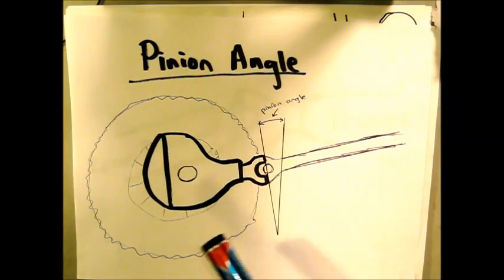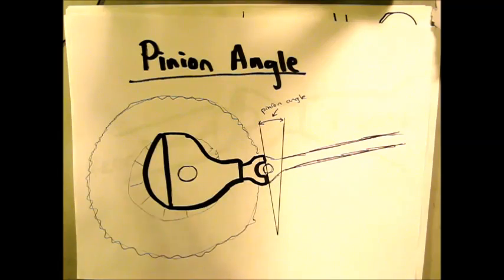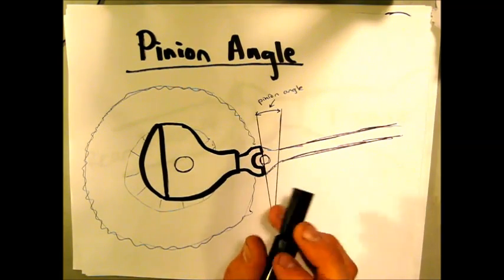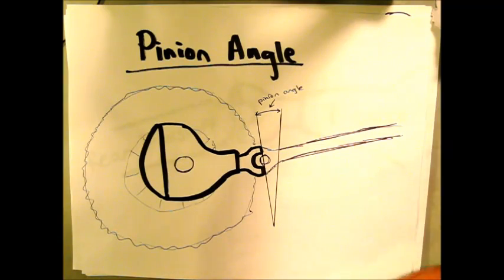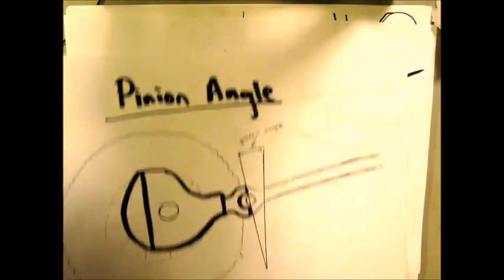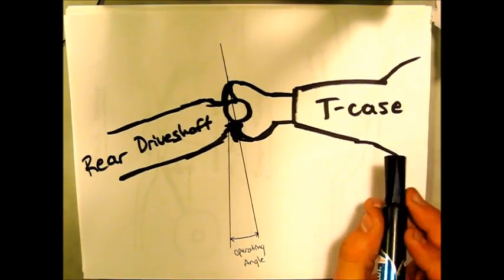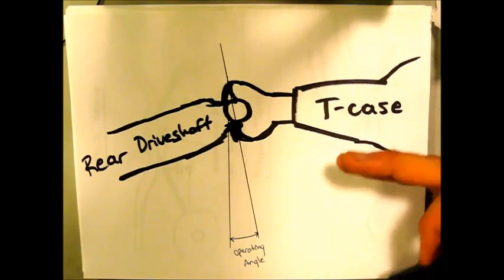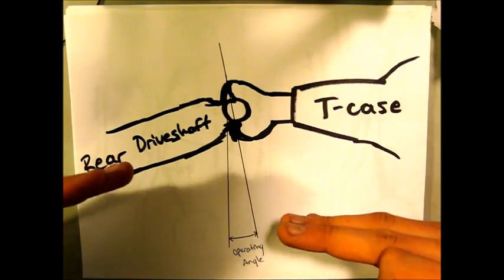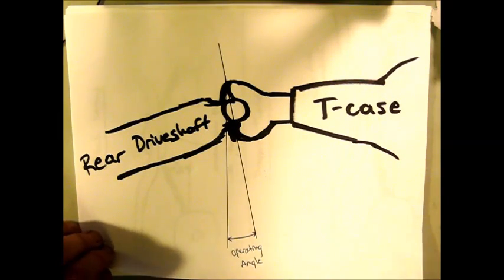And in something with leaf spring setups, this can be done by putting shims underneath the leaf spring packs, and then re-bolting them down, which can move your pinion up or down. Or if you're going to look at the transfer case side, that's where the transfer case drop comes into play, and the transfer case drop is essentially going to drop down the transfer case to correct the angle a certain amount, depending on the drop and your lift height and the current situation you're in.